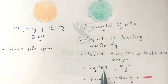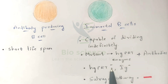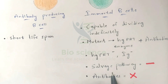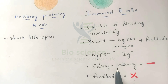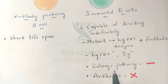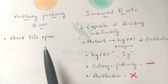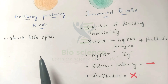In immortal B cells, the HGPRT enzyme is in mutant form — hence HGPRT-negative and Ig-negative. Because it is mutant, it blocks the salvage pathway and will not initiate nucleotide synthesis via the salvage pathway. As it blocks nucleotide synthesis, new antibodies cannot be produced. The antibodies can only be produced if the salvage pathway is functioning, but in immortal B cells, the mutant blocks it.